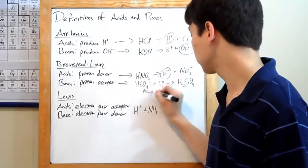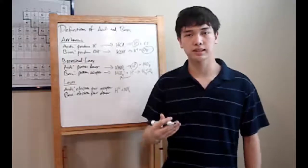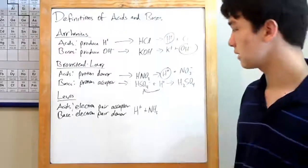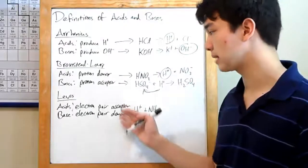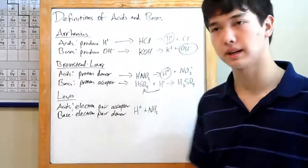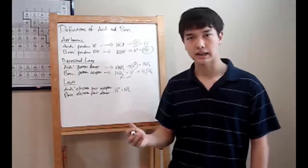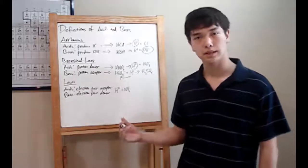The most recent definition is the Lewis definition of acids and bases. The Lewis definition defines acids as electron pair acceptors, and bases as electron pair donors. You'll only ever see something defined as Lewis acid or base if you see a reaction occurring.